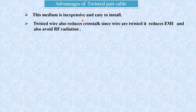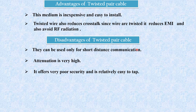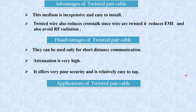Let us see the advantages of twisted pair cable. This medium is inexpensive and easy to install, and very little material is required. Twisted wires also reduce crosstalk, EMI, and avoid radio frequency (RF) radiation. Now, the disadvantages: they can be used only for short-distance communication like in LAN. Attenuation is very high — the signal gets weakened as the distance increases. It offers very poor security and is relatively easy to tap because the copper wire is just insulated by a plastic jacket. Applications include telephone lines to carry voice and data, and connecting a PC to a hub in a local loop.